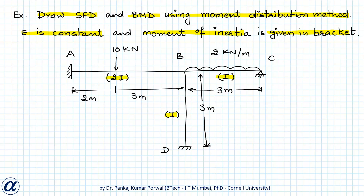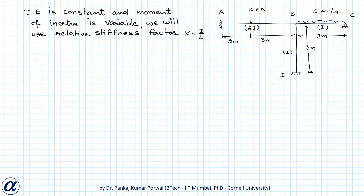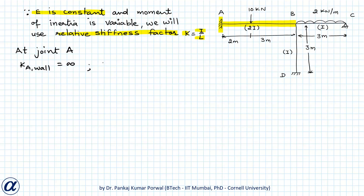The first step in solving a problem using the moment distribution method is to find distribution factors for all the members connected at all the joints. Since E is constant for all members, we use the relative stiffness factor k = I/L (moment of inertia divided by length). At joint A we have the fixed support and member AB. The fixed support has infinite stiffness, and stiffness factor k_AB = 2I/5.